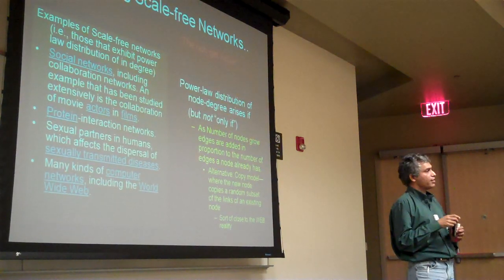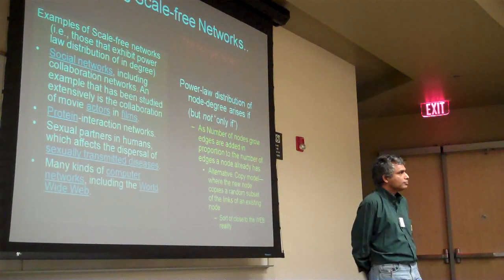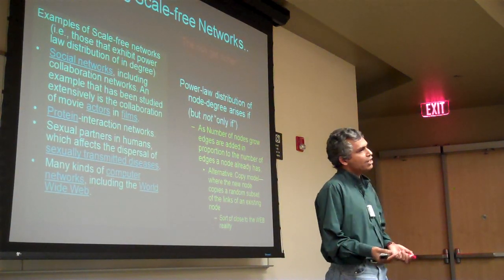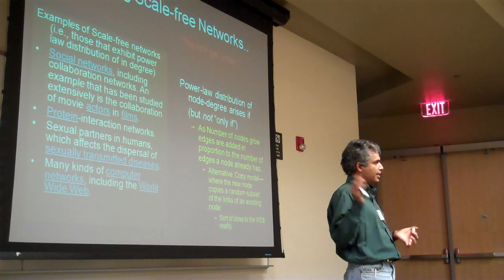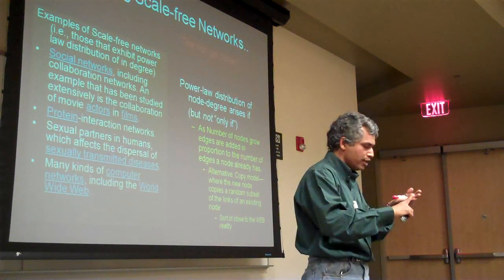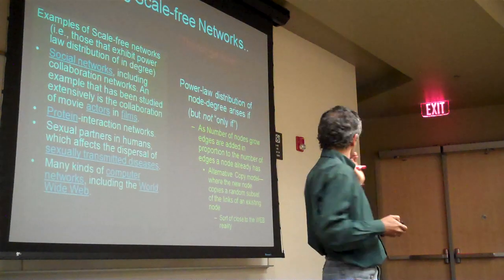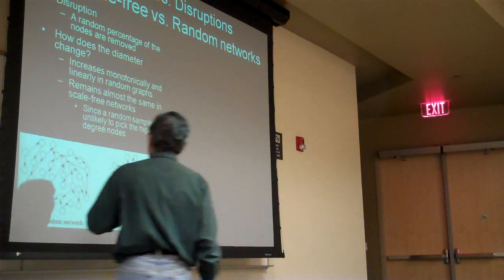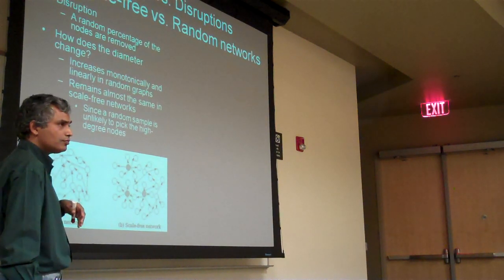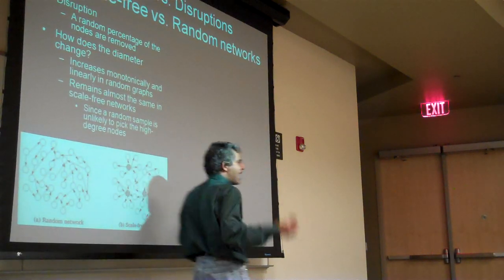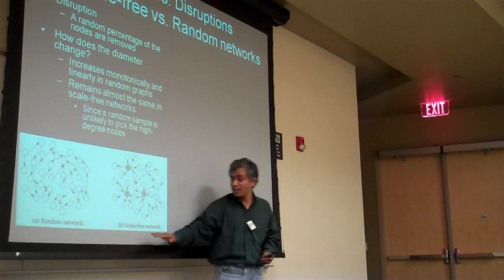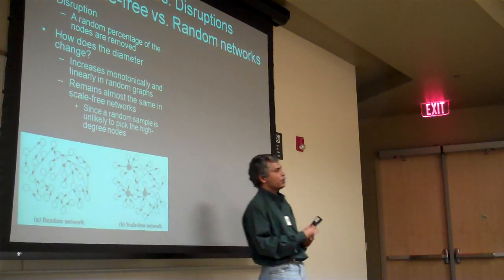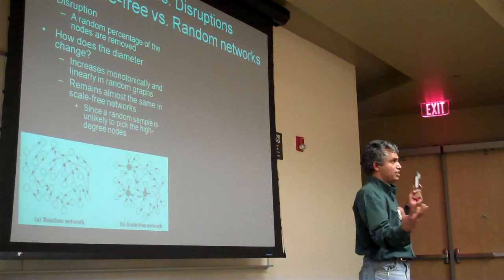Power law is scale-free. Scale-free, long-tail, and power law are all one and the same. The authority-hub distinction applies when you have directed edges. Power law networks work whether you have directed or undirected edges. If you have directed edges, you can talk about authority hubs; if you have undirected edges, you can talk about rich nodes versus non-rich nodes. These two example networks shown have directed edges, but you can generate random and scale-free networks with undirected edges as well.